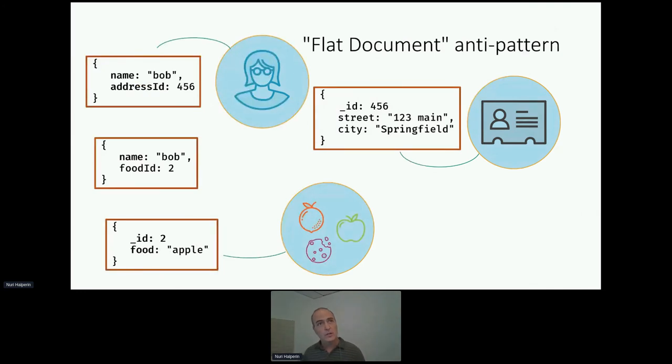Which brings us to another anti-pattern, which is the flat document anti-pattern. In this anti-pattern, people are remembering relational modeling techniques and spreading the various logical entities they think of into separate collections, namely the person into a collection of people with a flat document. And flat means that there's pretty much no nested fields and no arrays. It's just single scalar fields.